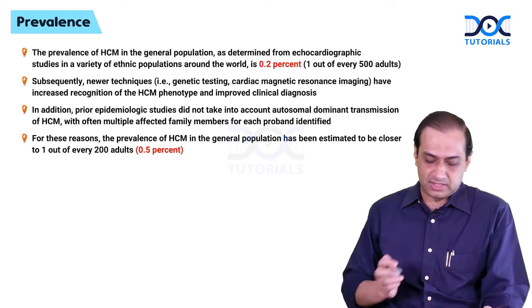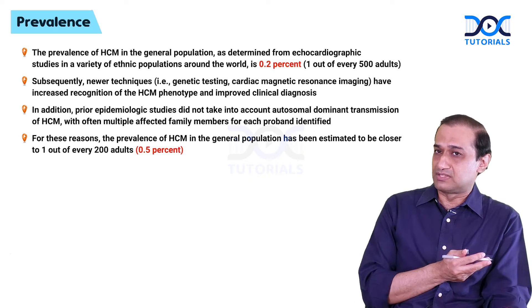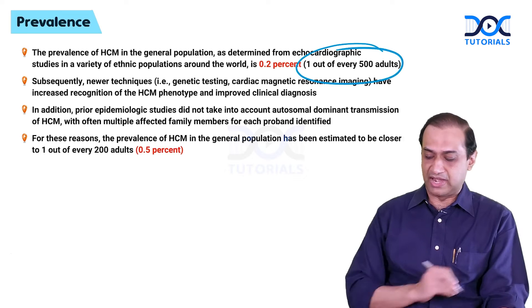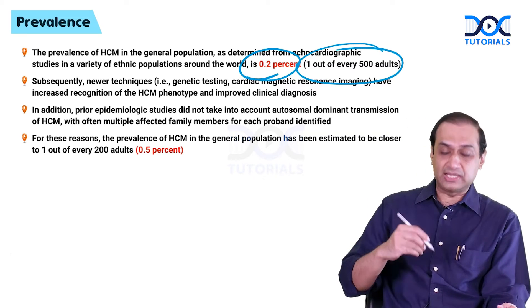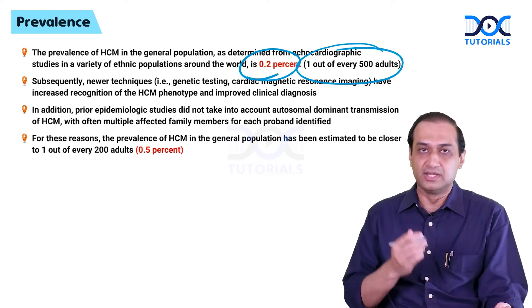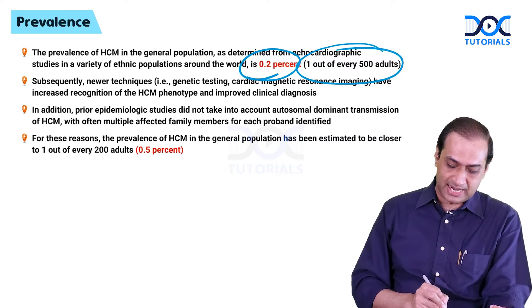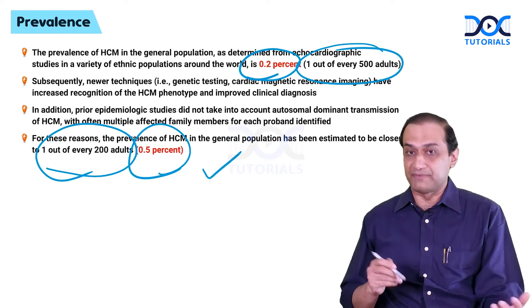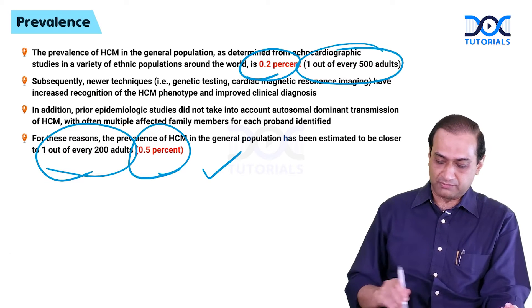Coming to the prevalence of the disease, it is one of the most prevalent disorders among genetic cardiovascular manifestations. Previously, it was thought to occur in 1 in 500, constituting 0.2% prevalence. But with the availability of newer imaging modalities to diagnose hypertrophic obstructive cardiomyopathy, we are more able to pick up asymptomatic patients, and hence 1 in 200 patients — around 0.5% of the general adult population — has been estimated to have hypertrophic obstructive cardiomyopathy.